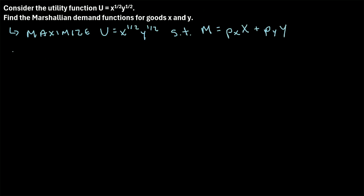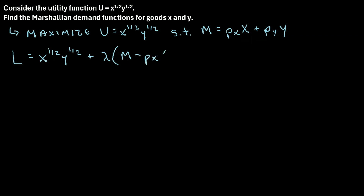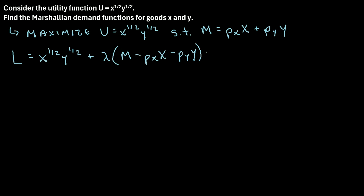The way we're going to start solving this is by writing down the Lagrangian L, which equals the utility function x to the one-half times y to the one-half, plus lambda times the income m minus the right-hand side of the budget constraint: p_x times x minus p_y times y.